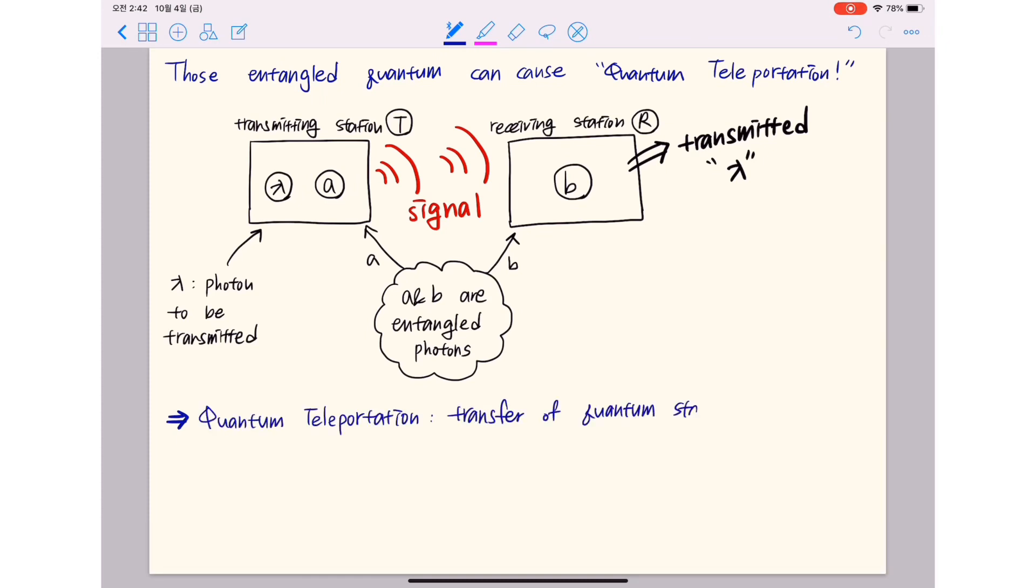Quantum teleportation is the transfer of quantum state from one location to another with previously shared quantum entanglement between the sending and receiving location.